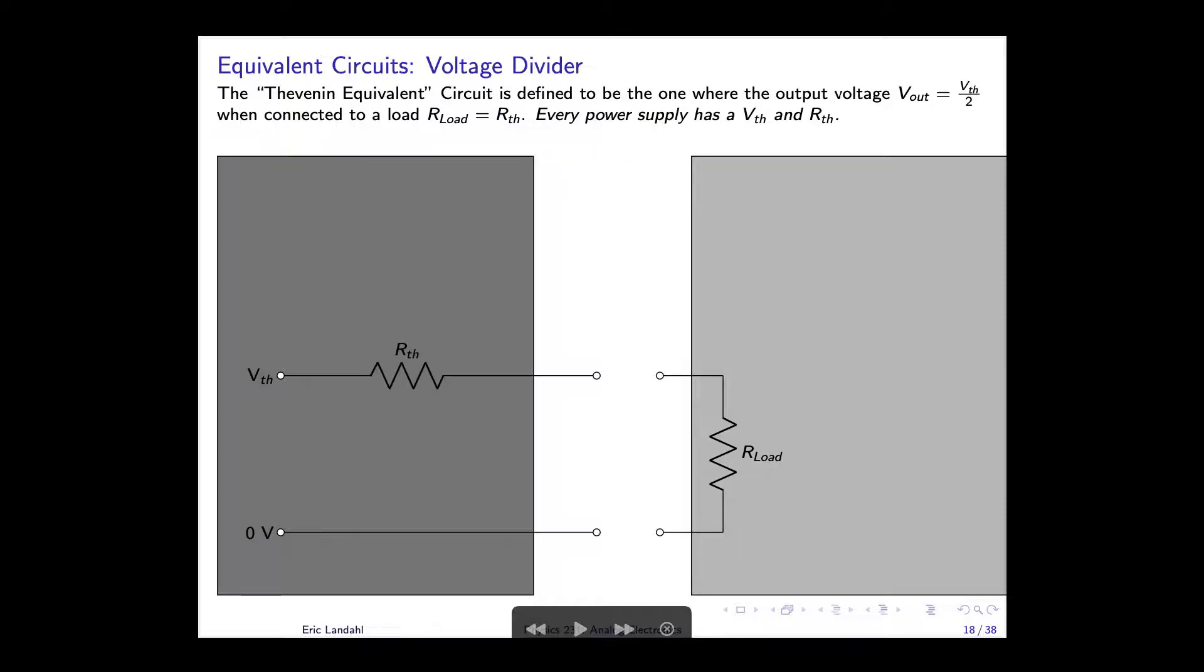The Thevenin equivalent has a very straightforward hypothesis, which says that anything in that box with resistors and other components can be replaced with simply two values. The first is the Thevenin equivalent voltage, that's Vth, and the second is the Thevenin equivalent resistance Rth. At the output of this box you have the two terminals ground and a wire that is floating at Vth, that potential voltage, and has an internal resistance of Rth.